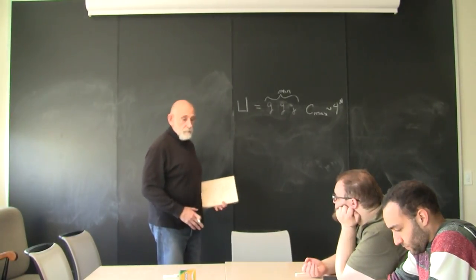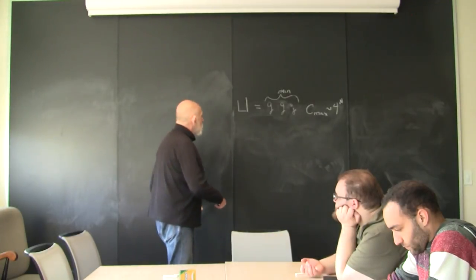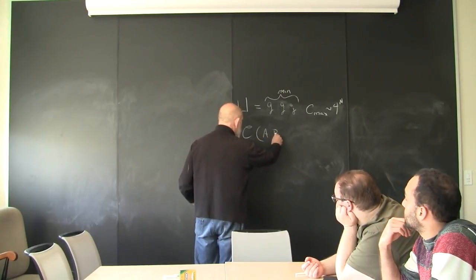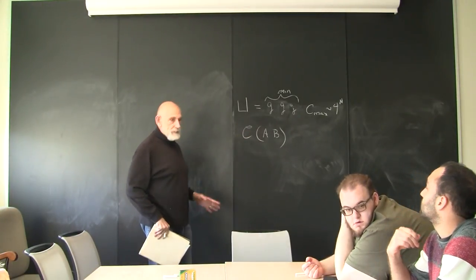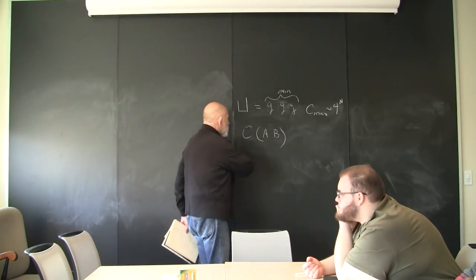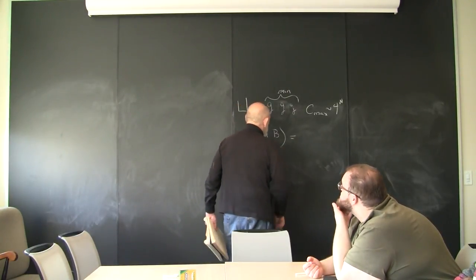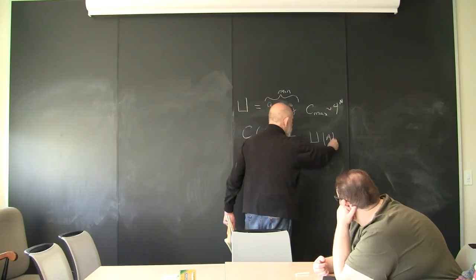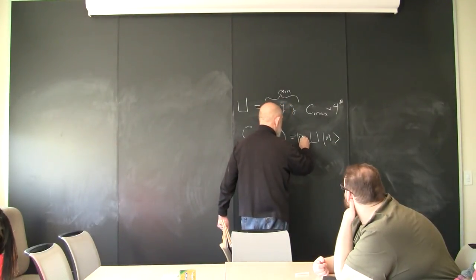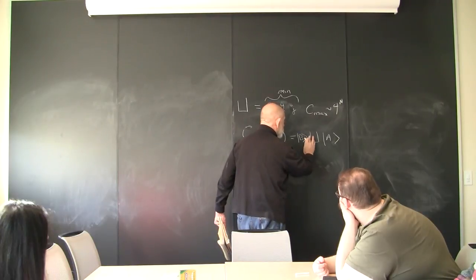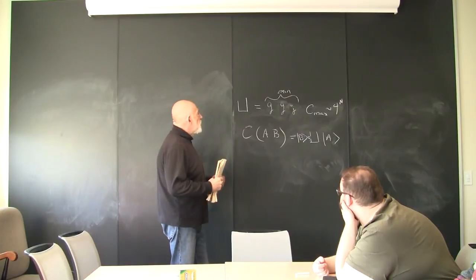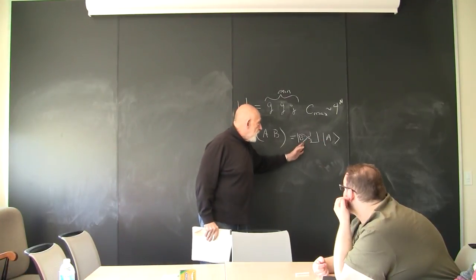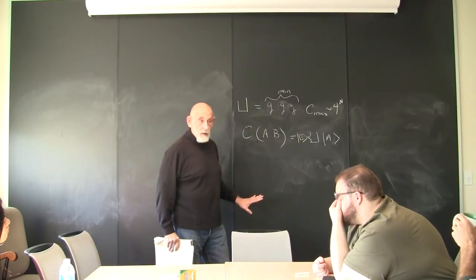There's also a notion of relative complexity of states. The relative complexity of two states A and B — where A and B are quantum states — is defined as follows: you look at all possible unitary operators which can take you from A to B, and you ask what's the least complex unitary operator that can get you from A to B. Equivalently, it's the minimum number of gates that it takes to go from A to B. That's the relative complexity of two states.